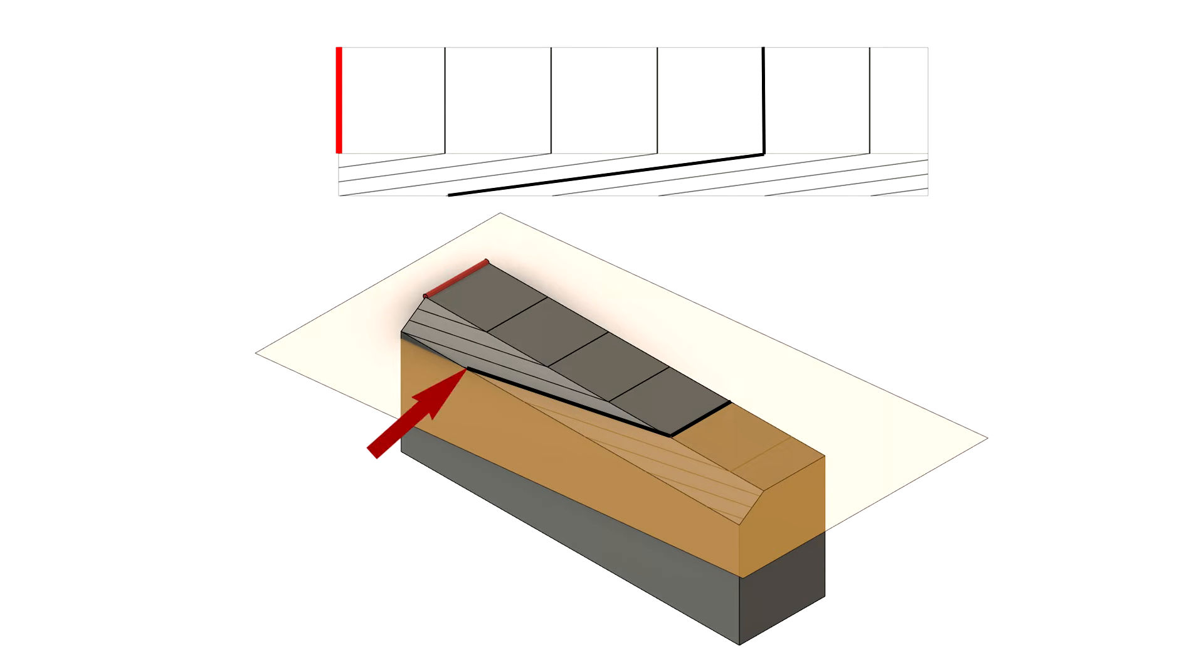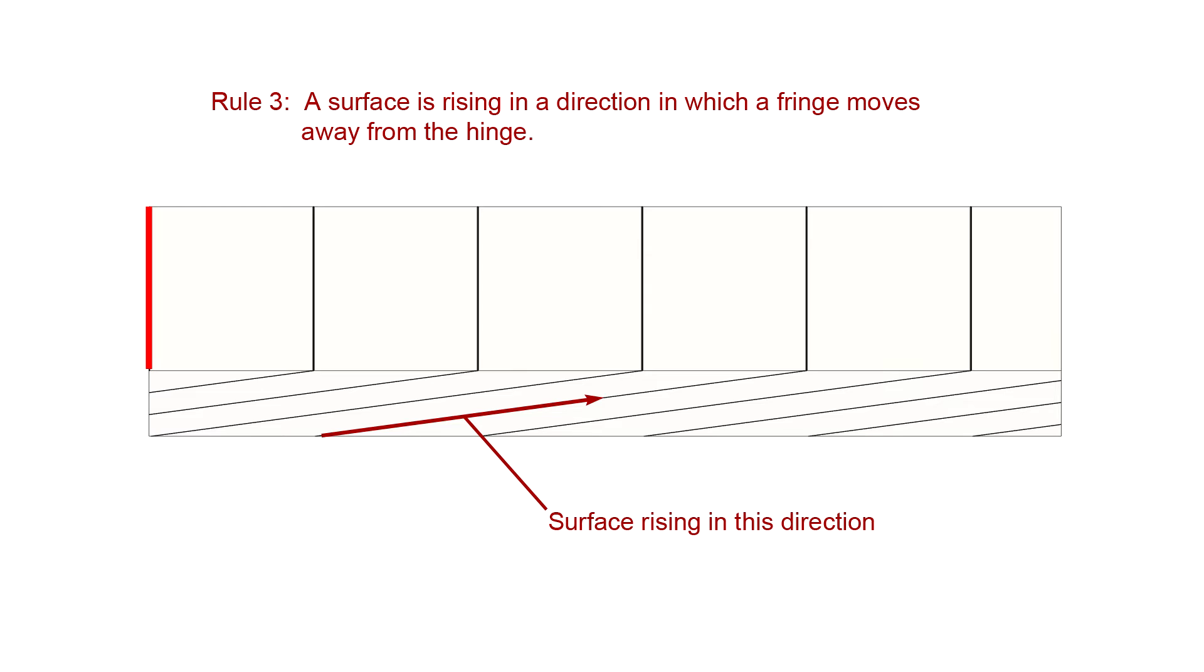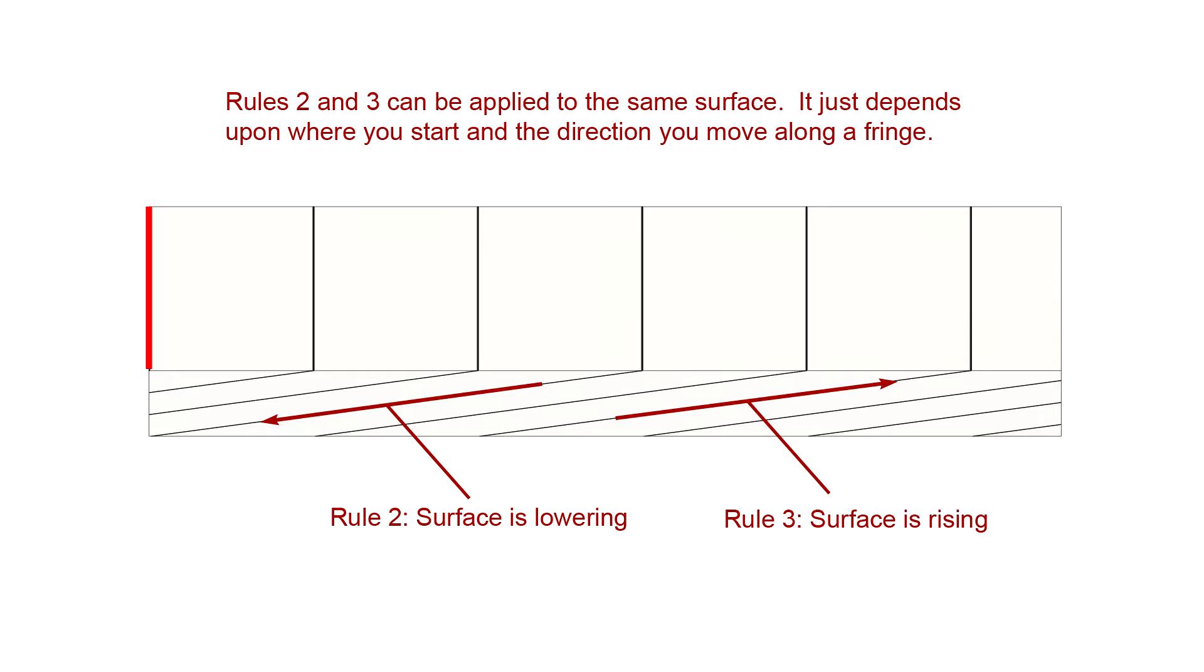Rule 3 is just the converse of rule 2. This time, start at the point where the fringe meets the outer edge of the chamfer. Now follow the fringe toward the top surface. The fringe moves away from the hinge as the surface rises. Rule 3 is, a surface is rising in a direction in which a fringe moves away from the hinge. So, rule 2 and rule 3 can both apply to the same surface. It just depends upon where you start on the fringe and the direction you move along the fringe.